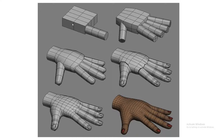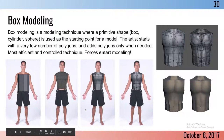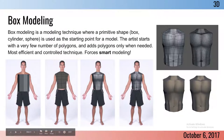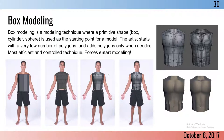This is normally how I model characters: I model the torso first, then check my poly count at the shoulder hole, make another cylinder, line it up with the same number of polys, box model the arm the same way, and then connect it.